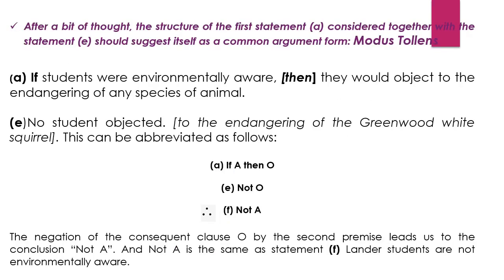Now, before we try to understand the situation here, let us understand what modus tollens is. You will learn in detail about modus tollens, modus ponens, and many others in chapter 9 on the method of deduction when we come to that. For now, just remember that modus tollens is a valid argument form in the form: if A then O, not O, therefore not A. So if the first premise is 'if A then O' and the second premise is 'not O', then we can conclude 'not A'.